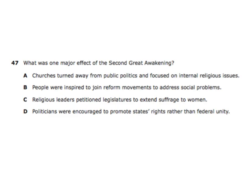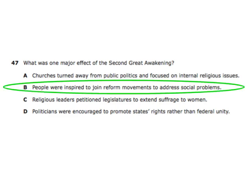What was one major effect of the Second Great Awakening? People were inspired to join reform movements to address social problems. The Second Great Awakening started in the late 1700s and spread through the early 1800s — a Christian religious revival that spread through America. Because of this new religious fervor, people joined movements addressing social problems: abolition of slavery, the temperance movement, and later the suffrage movement.